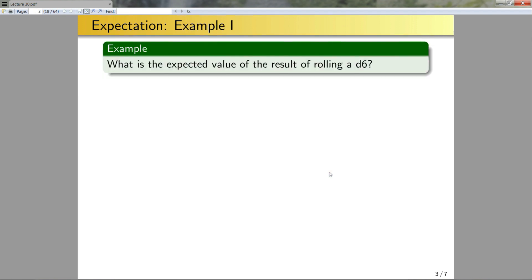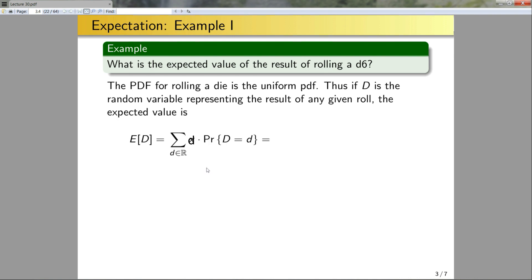So now let's compute some averages. What is the expected value of the result of rolling a d6? So to do this, I need two things. I need to know what the PDF is and I need to compute that sum. So the PDF for rolling a die is a uniform PDF, right? It's the uniform PDF over six elements. So thus, if D is the random variable representing the result of any given roll, the expected value is going to be E of D. And this will be the sum over all the d's in R of these terms here. Or put in a different way, since I know d can range between one and six, this is the sum from i is equal to one to six of i times one sixth. And that's just coming from the fact that these probabilities are uniform. So from here, I can factor out the one sixth. And I know how to add up all the integers from i is equal to one to six. So this is one sixth times this expression here, or 21 over six. Okay, pretty straightforward.